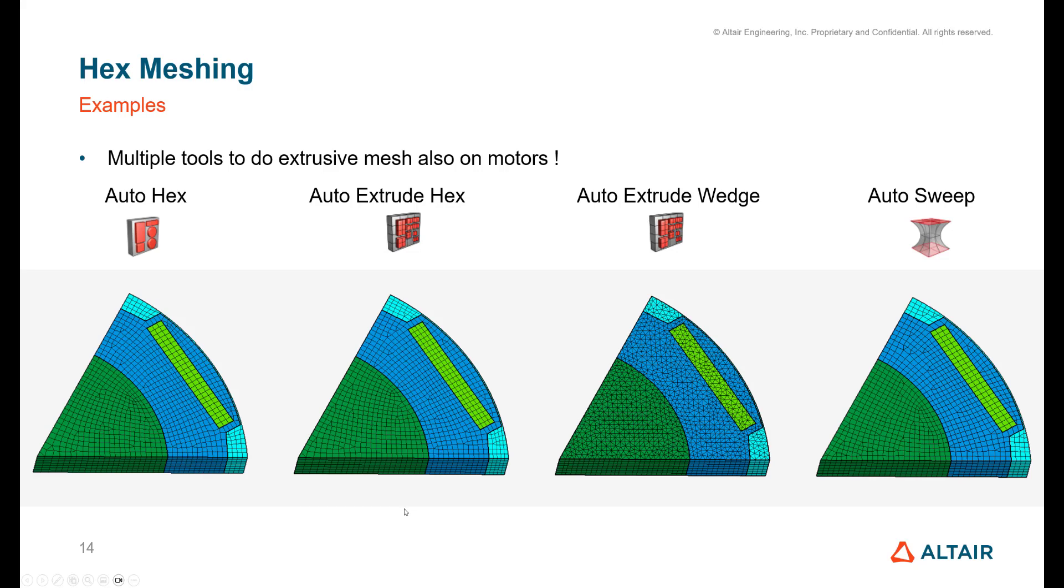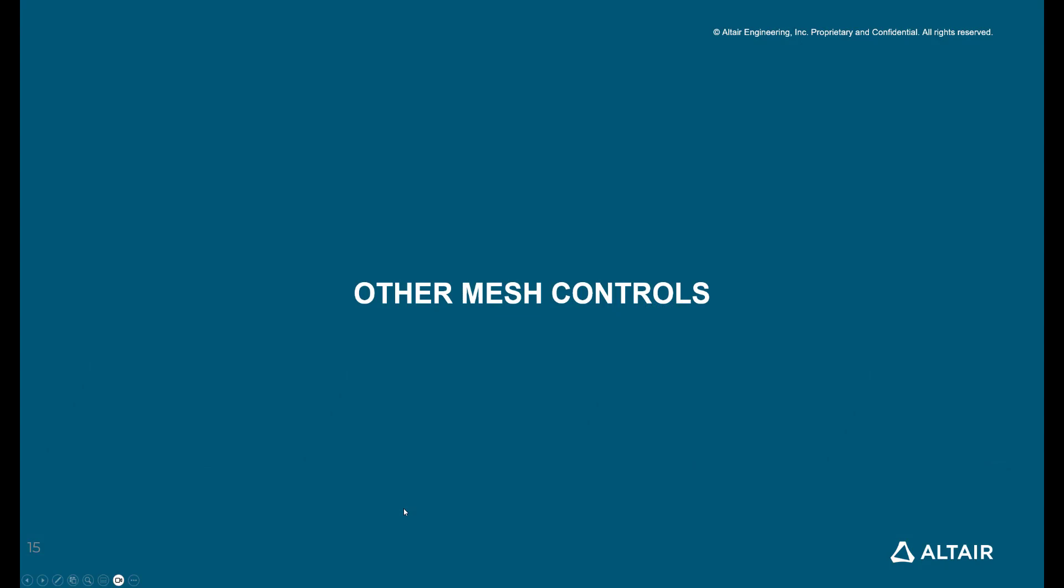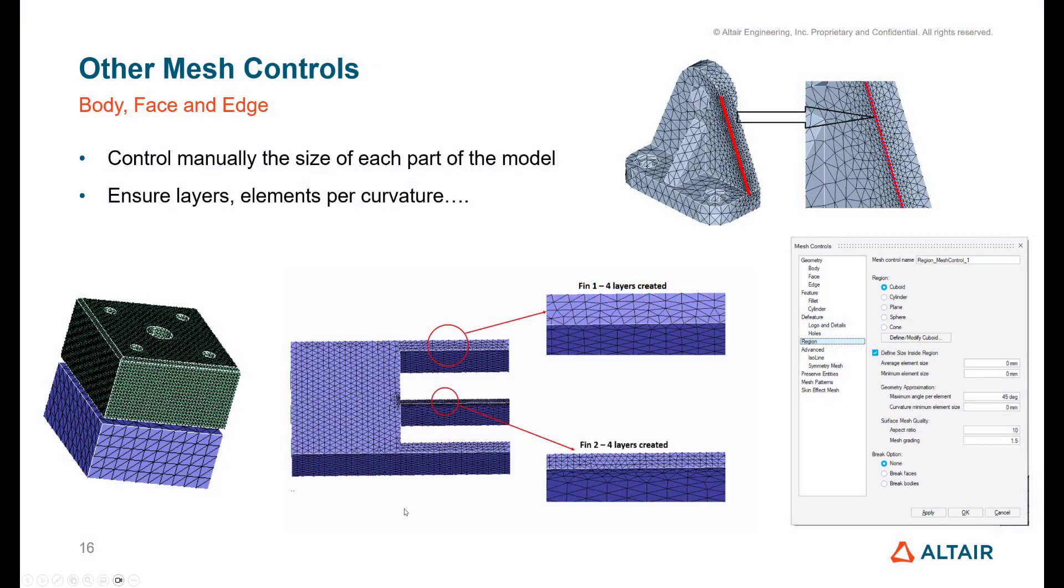Let's have a final look at other mesh controls. Obviously you can also control the mesh in your model manually, which means you can define different types of mesh controls. We can see body mesh control to control the size on the overall body, surface mesh control where you can even input a number of layers to be respected, as you can see in the middle picture.